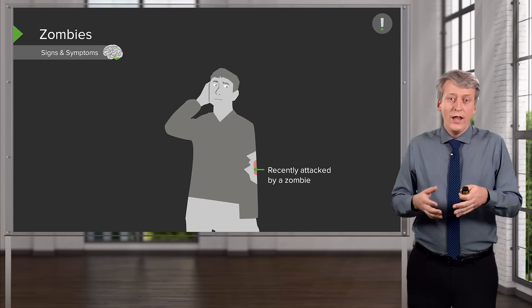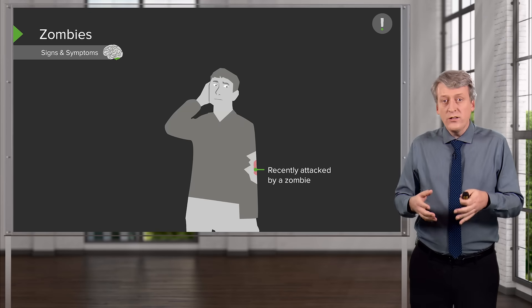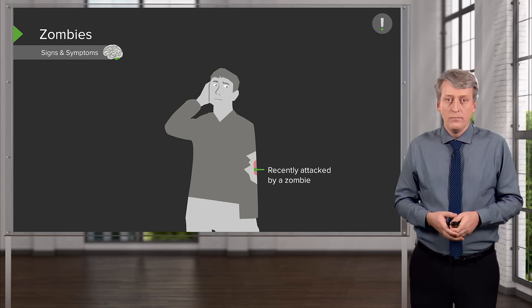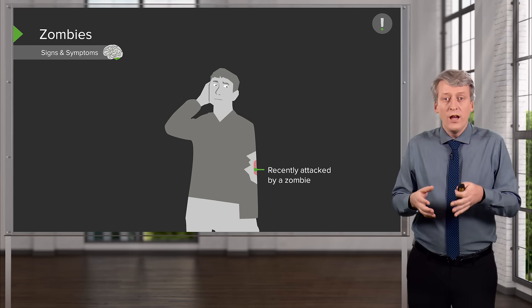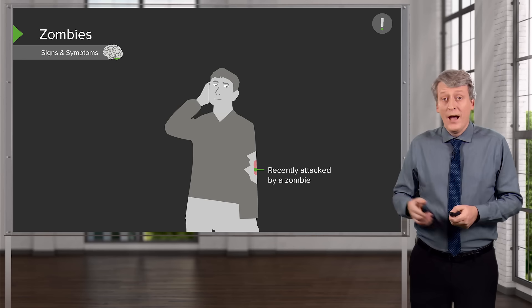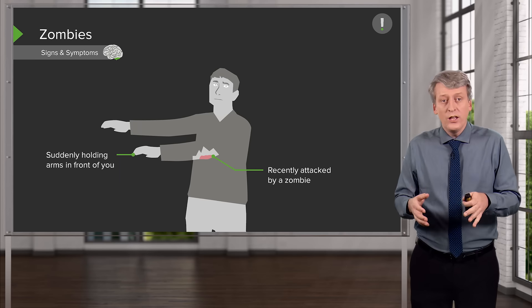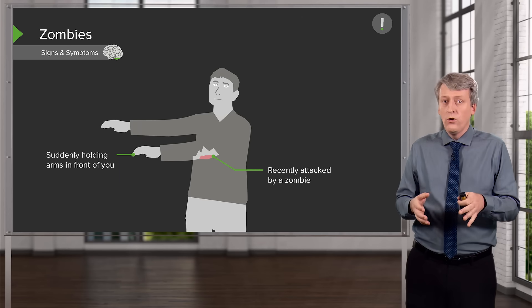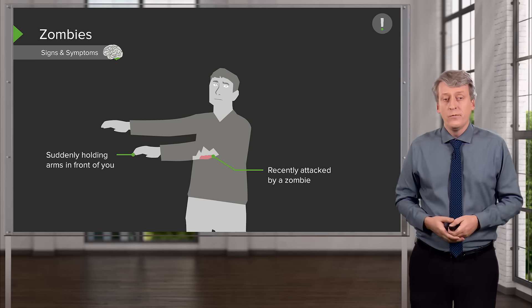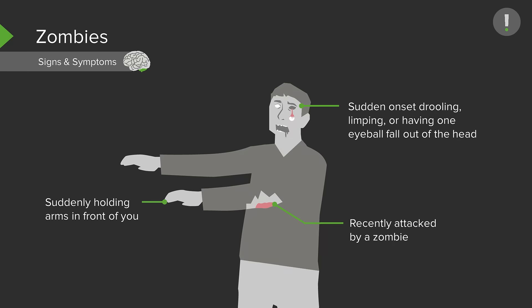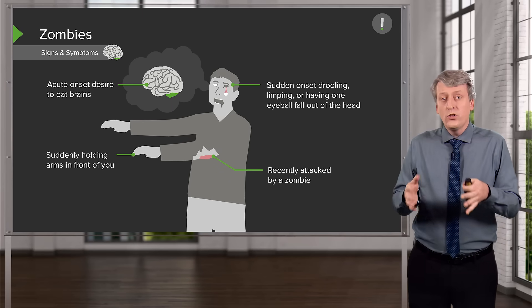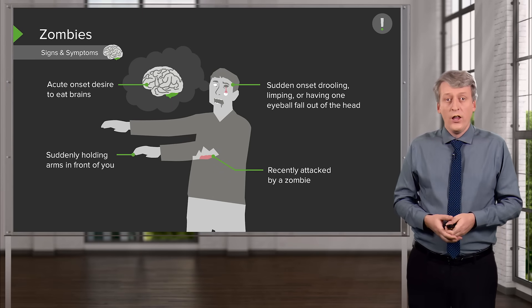How you know you are likely to be a zombie is based on history and physical exam, so there should be a history of a recent attack by a zombie. After being attacked, you should generally notice that you are uncontrollably holding your arms out in front of you. After that, you may notice a sudden onset of drooling, limping, or having one eyeball fall out of your head. Shortly thereafter, patients are generally consumed with a desire to eat other people's brains.